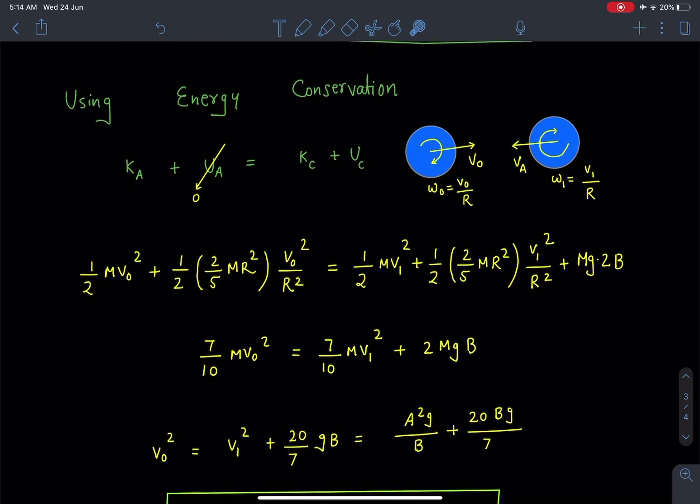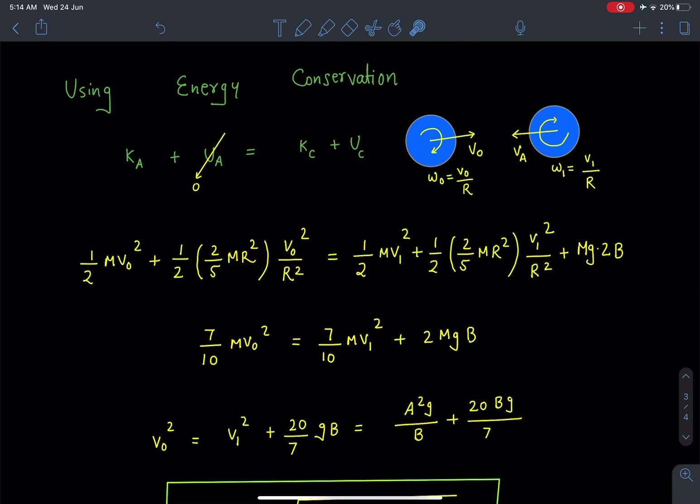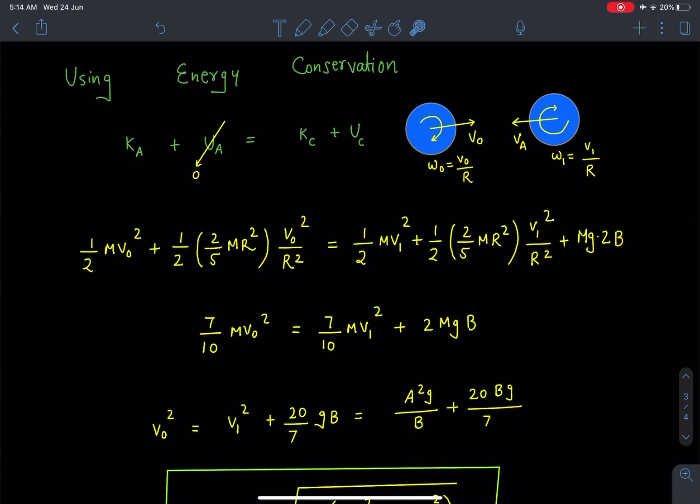Now on applying energy conservation between lowermost point and the topmost point, so we can say total mechanical energy is conserved. If I take potential energy reference at lowermost point, its potential energy I can take as zero.